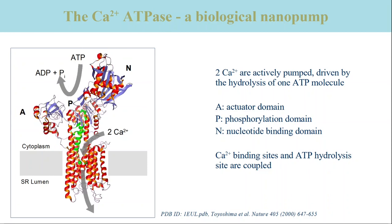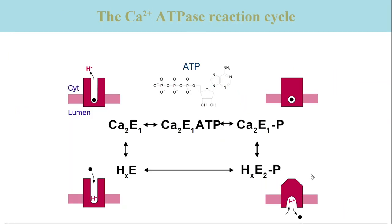Interestingly, the hot spots of this protein — fuel consumption at the top of the P domain and the pump unit in the middle of the transmembrane domain — are coupled over a large distance of about 50 angstroms. The protein resides in the membrane of the sarcoplasmic reticulum in muscle cells. The transport process is driven by ATP hydrolysis and takes place in a reaction cycle shown here in a simplified version.